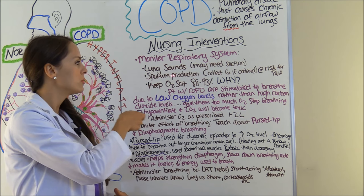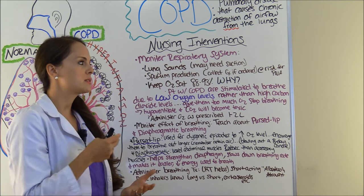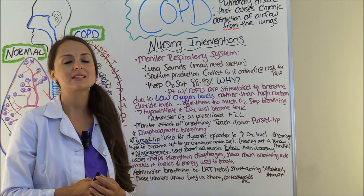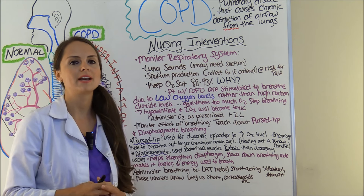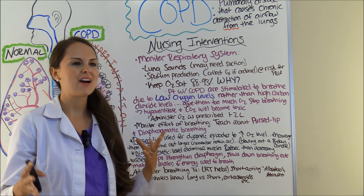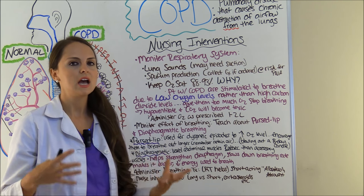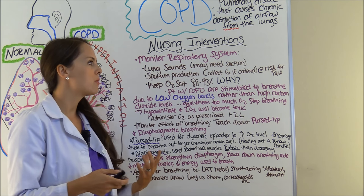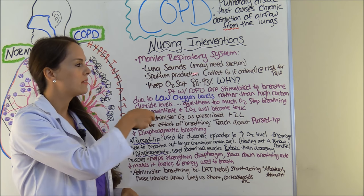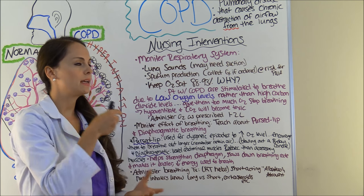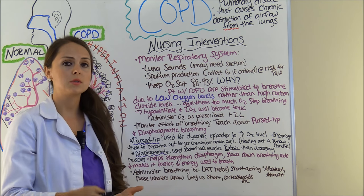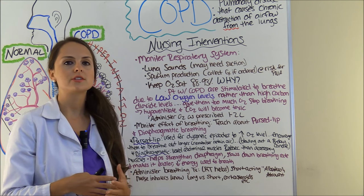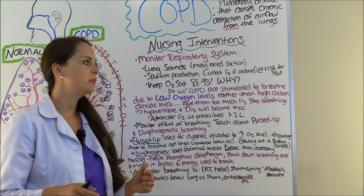You're also going to be monitoring that sputum production. Your patients with chronic bronchitis, as we learned in part one, tend to have really productive coughs. So if ordered, you may need to collect a sputum culture because these patients are at risk for developing pneumonia.